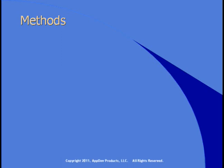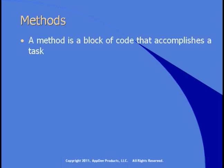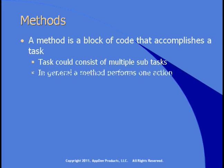Methods are used to perform actions. A method is a block of code that accomplishes a task. The task can consist of multiple subtasks. In general, a method performs one action.